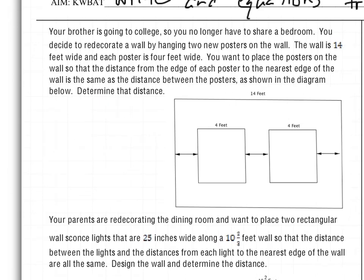Your brother is going to college, and you no longer have to share a bedroom with him, so you decide to redecorate a wall by hanging two new posters. The wall is 14 feet wide. We want to space them so there's the same distance from the edge of the wall to the edge of the poster, between the posters, and from the edge of the wall to the other poster — all three distances are the same.